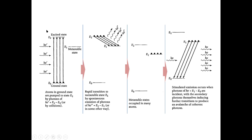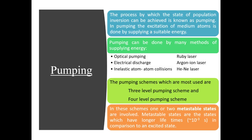Pumping is a process by which population inversion can be achieved. In pumping, the excitation of medium atoms is done by supplying suitable energy. According to the type of energy supplied, pumping can be divided into many types: optical pumping, electrical pumping, and thermal pumping. According to the number of energy states involved, pumping can be subdivided into two schemes: the 3-level pumping scheme and the 4-level pumping scheme. In these schemes, one or two metastable states are involved.